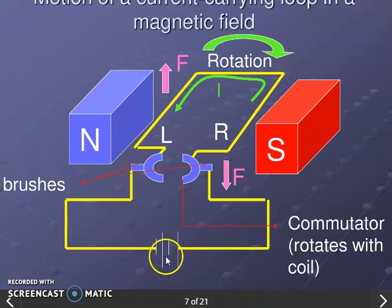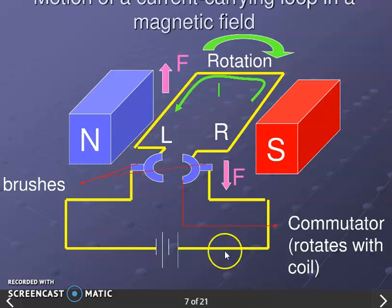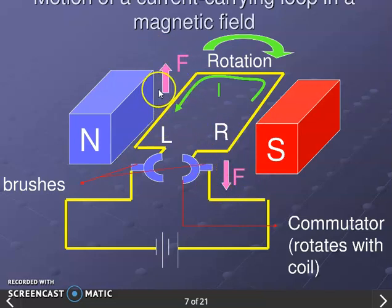In the process, we switch the battery on. The battery always provides DC current. The current flows from the positive terminal through the circuit. The current direction in the coil determines the direction of the force — on one side the force is upward and on the other side it is downward. This creates a couple of forces, and as a result the coil rotates.